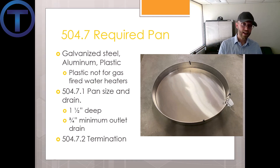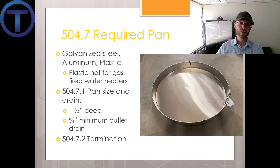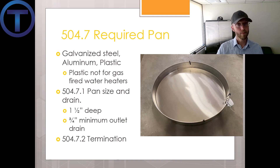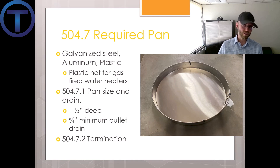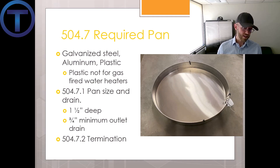Metal is required underneath a gas-fired water heater. The pan size and drain are specified in 504.7.1: the pan has to be a minimum of one and a half inches deep and must have a minimum three-quarter inch drain outlet. 504.7.2 talks about the termination point for the pan drain — the pan drain shall extend full size and terminate over a suitably located indirect waste, and terminate not less than six inches and not more than 24 inches above the adjacent ground surface if discharged outside.